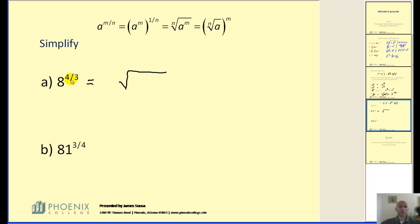The key here, again, the denominator tells you the index. This is a cube root. The base is our radicand. And the numerator, four, is our exponent.